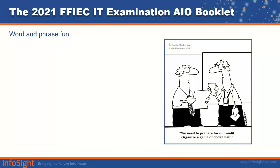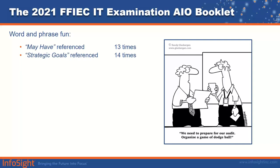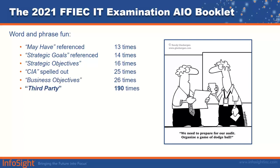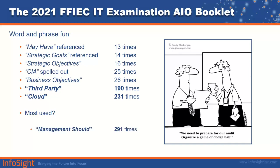Let's have a little fun with words and phrases in this document. The term 'may have' is referenced 13 times. 'Strategic goals' is referenced 14 times. 'Confidentiality, integrity, and availability' is spelled out 25 times. 'Business objectives' appears 26 times. 'Third party' appears 190 times. 'Cloud' is referenced 231 times. And the most-used phrase? 'Management should' — referenced 291 times. That's an awful lot of management shoulds.